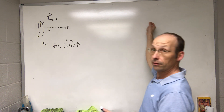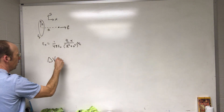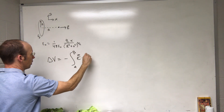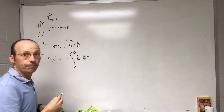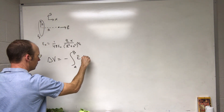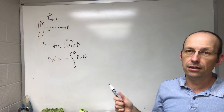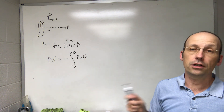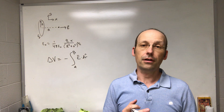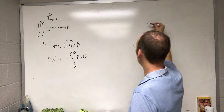Now, what's the electric potential with respect to infinity? If I bring a point charge from infinity to that point, what's the change of potential? Let's start with the definition: ΔV equals negative the integral from A to B of E · dr. That comes from the definition of change in potential energy — it's potential energy per unit charge. Potential energy is based on work done by a conservative force; the negative sign comes from moving to the other side of the energy equation.